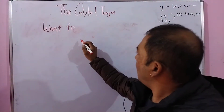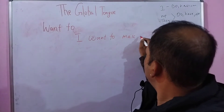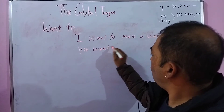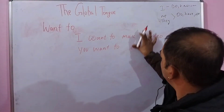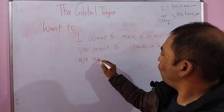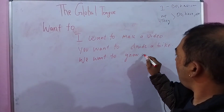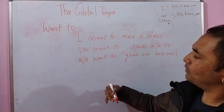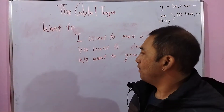So let's say: 'I want to make a video,' 'You want to write,' or 'We want to grow our business.' Whenever we use 'want to' with the first person or second person, singular and plural, we are able to use it nicely. But the problem arises when we use the same statement for the third person.